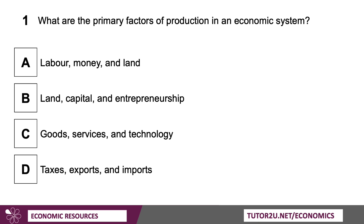Question one: What are the primary factors of production in an economic system? The answer is land, capital, and entrepreneurship — labour was excluded there, but those are all three valid answers.